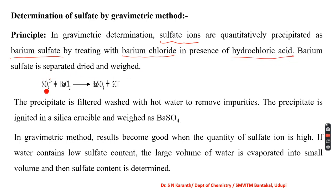The water which contains sulphate ions is treated with barium chloride in the presence of hydrochloric acid. A precipitation reaction takes place whereby barium sulphate gets precipitated. The formed barium sulphate is separated, the precipitate is filtered and washed with hot water to remove impurities, then finally ignited in a silica crucible and weighed as barium sulphate.